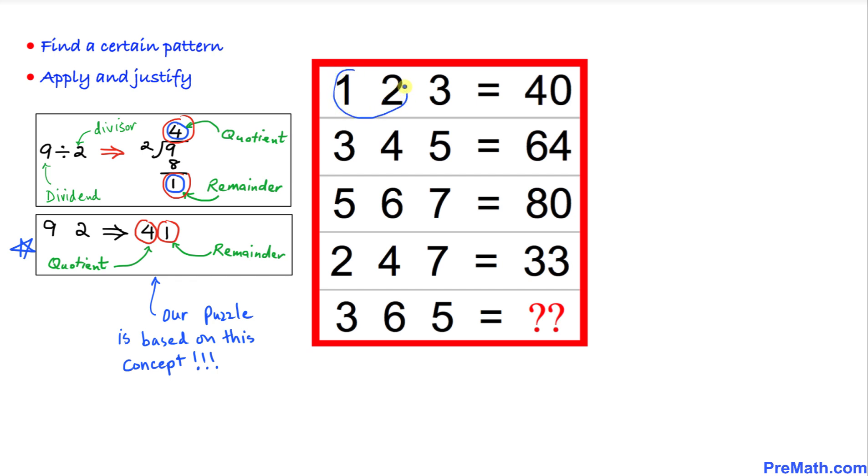Now let's focus on our original puzzle and we are going to divide this 12 by this number 3. If I divide 12 divided by 3, we are going to have 0 as a remainder and 4 as a quotient. So 4 is going to be our quotient and this 0 is our remainder.